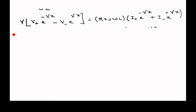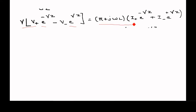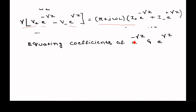This is the expression for the characteristic impedance of the transmission line: Z₀ = (R + jωL)/γ. Now comparing the coefficients of e^(+γz): on the left hand side we get −γV⁻, and on the right hand side we get (R + jωL)·I⁻. Taking the ratio of −V⁻ to I⁻ also gives (R + jωL)/γ.